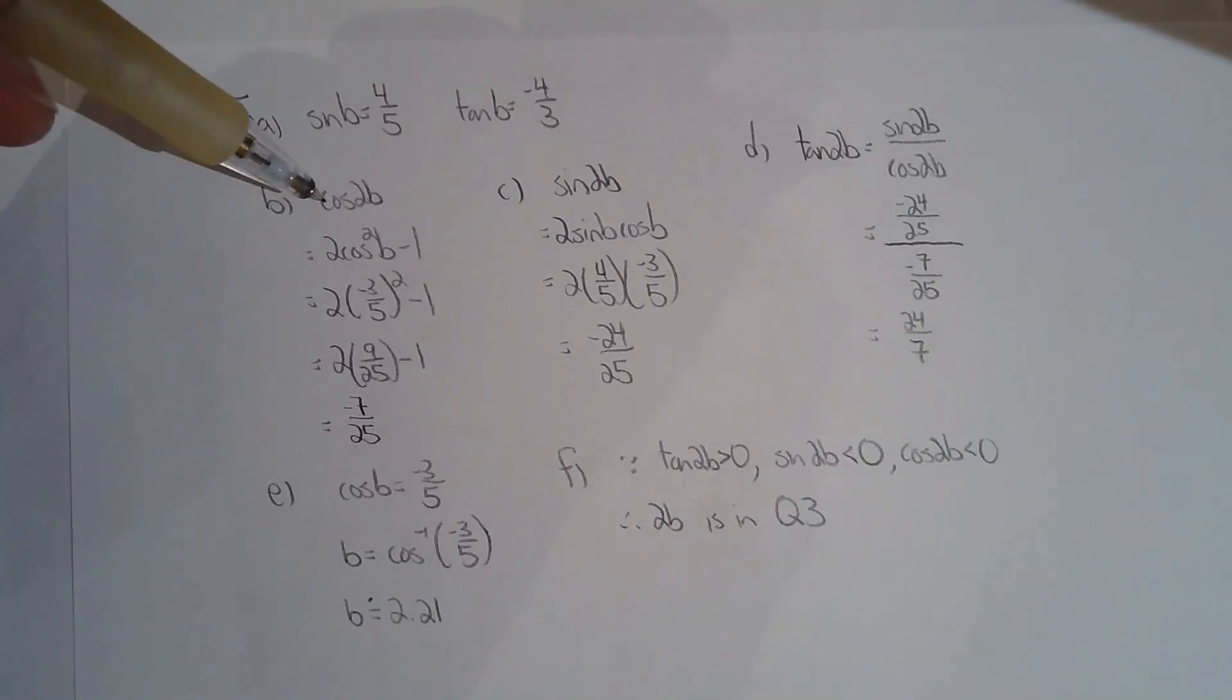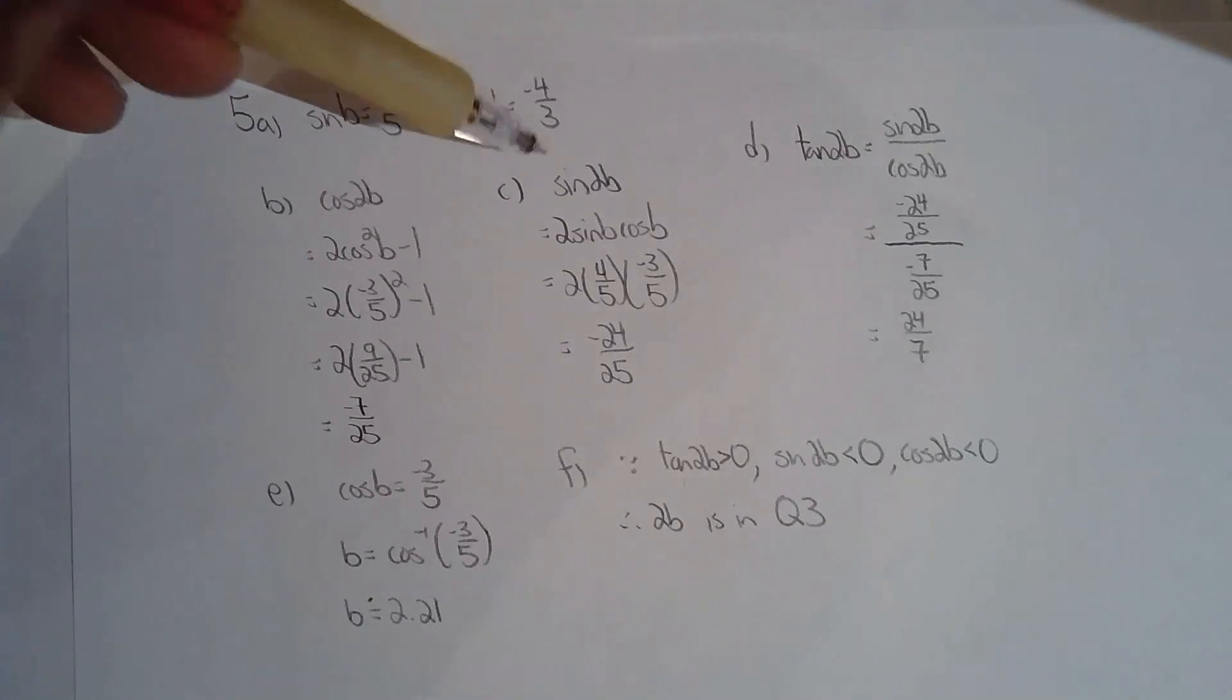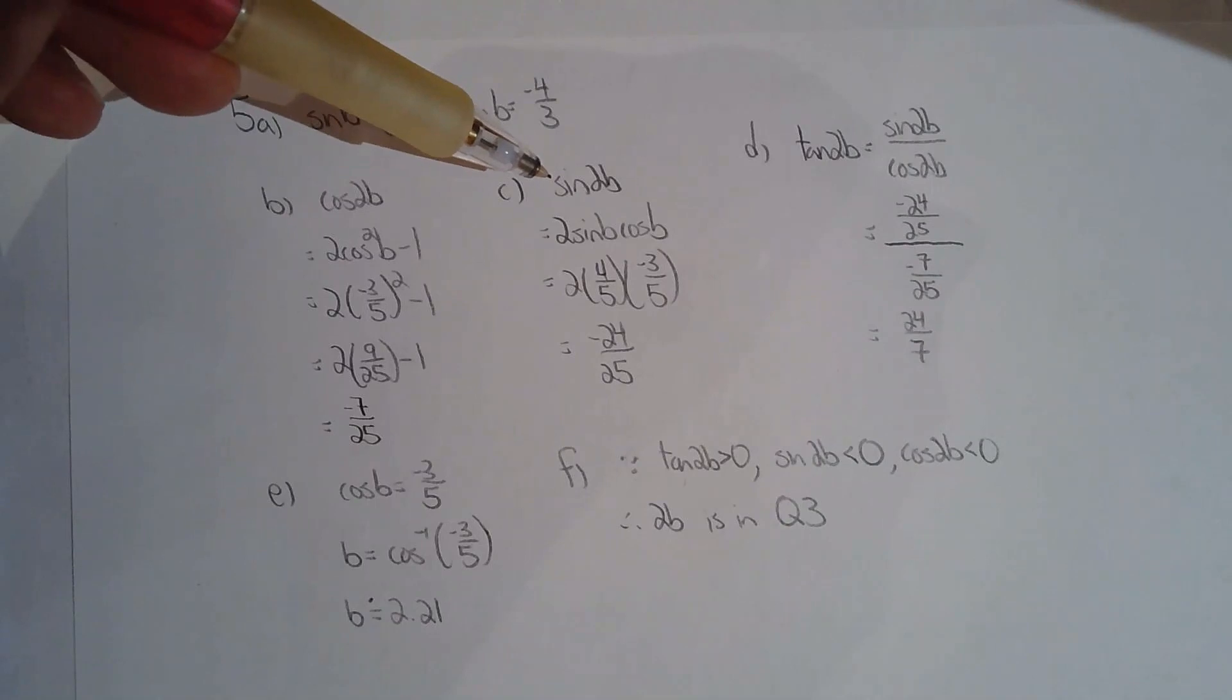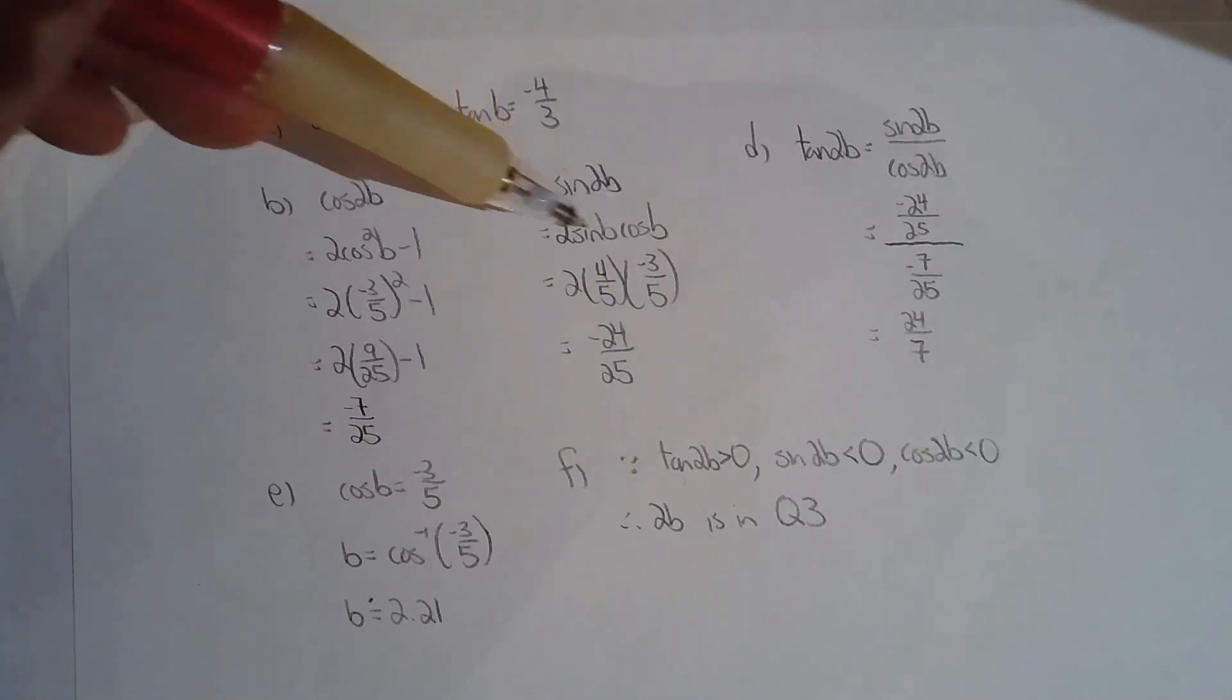And then in part b, they ask me what's cos of 2b? Well, I could use any of the three versions of the double angle formula for cosine. But since in the question, they provided me the knowledge of cos b, then I use it, I use the two cos squared b minus one version. For five c, they asked me what's the exact value for sine two b. There is only one version for the double angle formula for sine. So two sine b cos b, I know what sine b is, I know what cos b is, simplify.